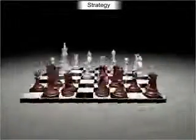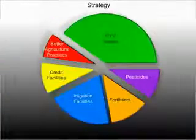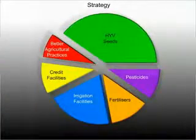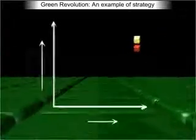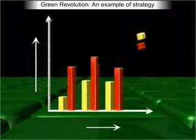Strategy is a term which includes taking a proactive approach that evaluates all activities based on how well the activity moves the business towards its core goal. It is an elaborate and systematic plan of action to achieve a particular goal. For example, the Green Revolution was adopted as a strategy to increase the agricultural output.